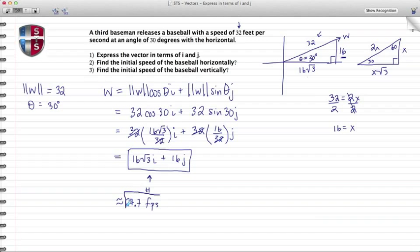Now for part 3, this is our vertical component. There's no conversion necessary - it's just 16. So vertically the baseball is moving at 16 feet per second.